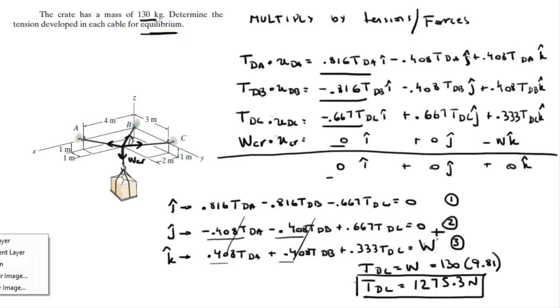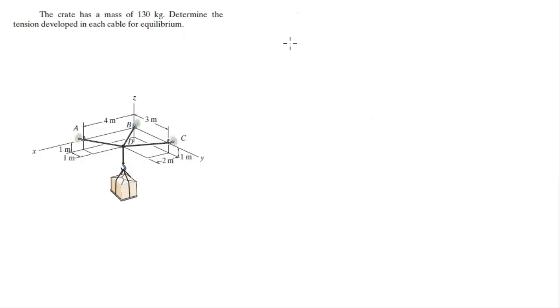And this is the way I did it. Now I need to do matrices for those of you who know me. And you get equation 1, just rewrite it: 0.816 TDA minus 0.816 TDB minus 0.667 TDC is equal to 0.